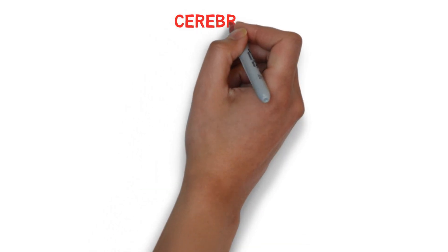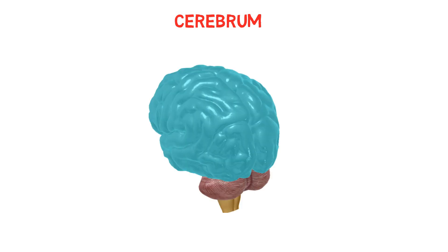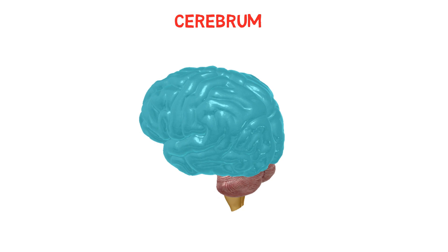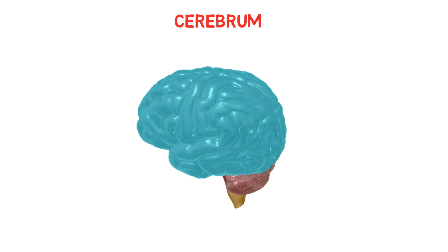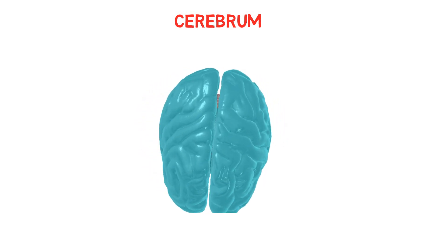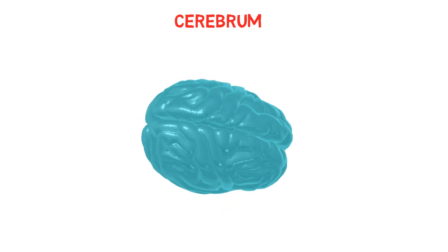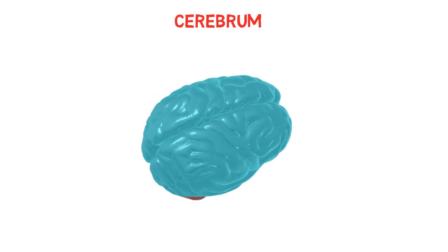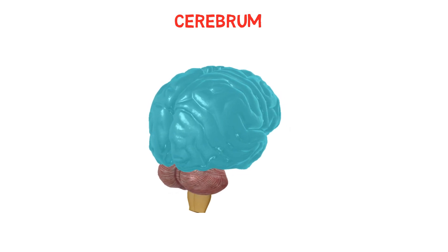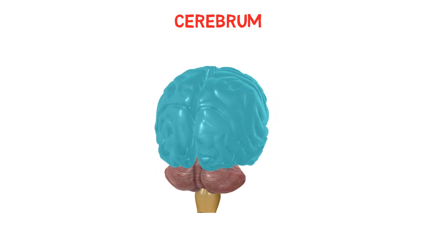Today we are going to discuss the cerebrum — the principal and most anterior part of the brain in vertebrates, located in the front area of the skull and consisting of two hemispheres. It is responsible for the integration of complex sensory and neural functions, and the initiation and coordination of voluntary activity in the body.